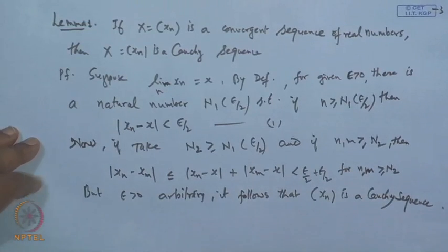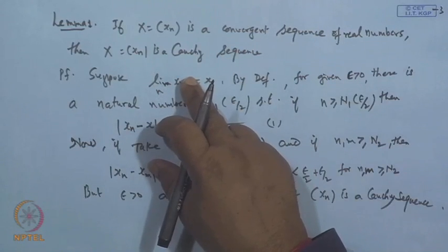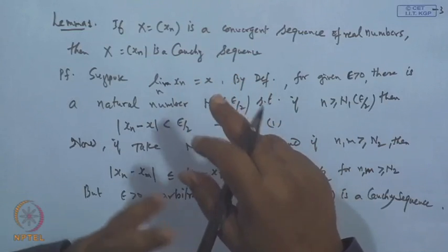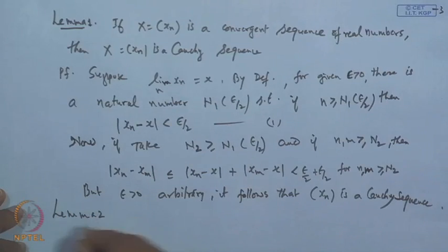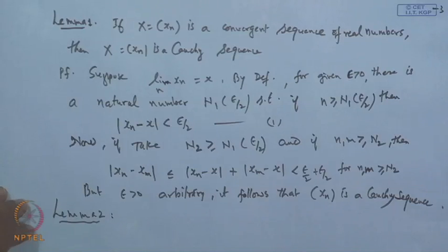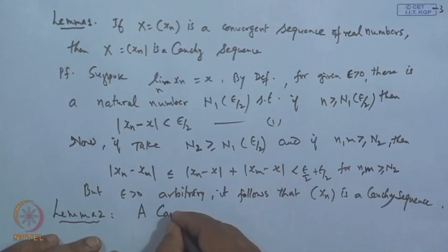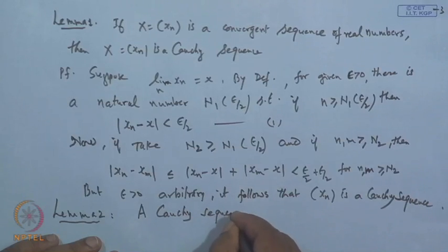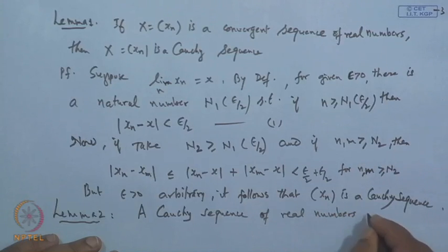As we have seen every convergent sequence is a Cauchy sequence. Now we will also show that every Cauchy sequence is a bounded sequence. Lemma 2 states: a Cauchy sequence of real numbers is bounded.